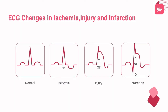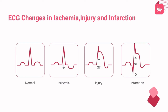Now let us take a quick look at the ECG changes associated with ischemia, injury, and infarction. In ischemia, the changes include ST segment depression of more than 1 mm in limb leads and 2 mm in precordial leads, and T wave increases in size — it may be tall, peaked, or inverted. In injury, ST segment elevation is seen in two or more contiguous leads, along with T wave inversion or flattened T wave.